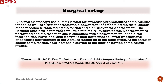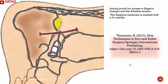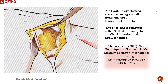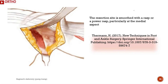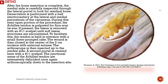Debridement is performed and the resection site is smoothed with a power rasp up to the distal insertion site. Provisional skin closure is then performed, followed by additional endoscopic debridement of the Achilles tendon up to the mid portion. At the anterior aspect of the tendon, debridement is carried to the inferior portion of the soleus muscle. The Haglund exostosis is marked with a number one needle and visualized using a small Hohmann and a Langenbeck retractor. The exostosis is removed with a size ten osteotome up to the distal insertion of the Achilles tendon. The resection site is smoothed with a rasp or power rasp, particularly at the medial aspect. After bone resection is complete, the medial side is carefully inspected through the lateral portal to look for residual bone.